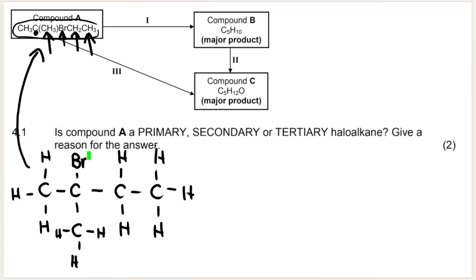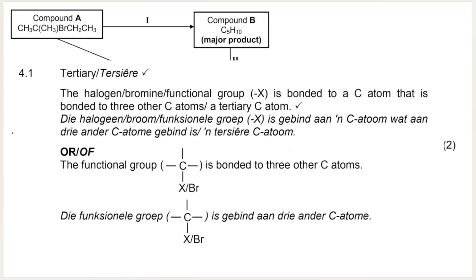Now, is it a primary, secondary, or tertiary haloalkane? How you answer this is, the carbon that is bonded to the halogen, how many other carbons is that carbon bonded to? This carbon here that I've highlighted in green is bonded to one, two, three other carbons. So it is a tertiary haloalkane. And this is how they want you to answer it. The halogen group is bonded to a carbon atom that is bonded to three other carbon atoms.